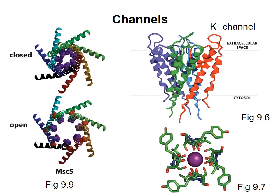The diagrams on the right show two different views of a potassium ion channel. You can see that many alpha helices come together to form the pore through which the potassium ion, shown as a purple sphere, can pass.